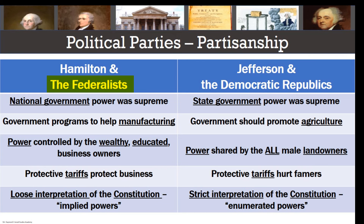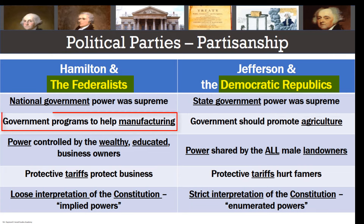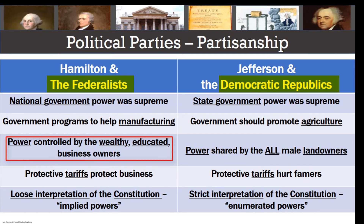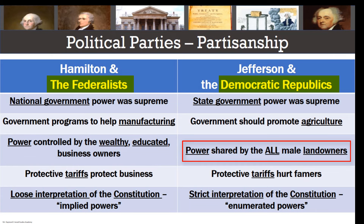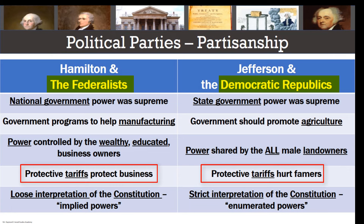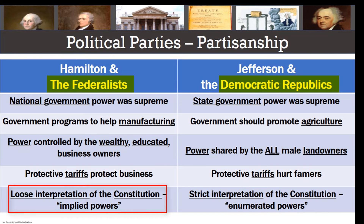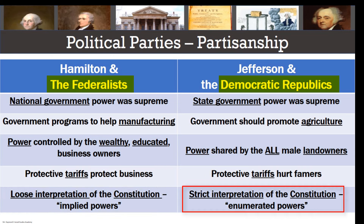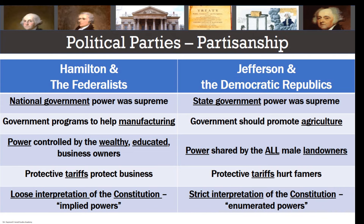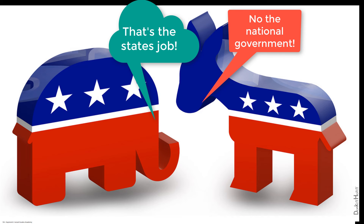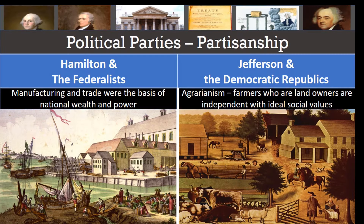Here's a look at where the two parties differed. Federalists thought the national government was supreme, while Republicans thought state governments should be more powerful. Federalists favored manufacturing, while Republicans favored farming. Federalists thought power should be held by the wealthy, the educated, and business owners, while Republicans thought all male landowners should have power. Federalists liked tariffs; Republicans hated them. Federalists wanted a loose interpretation of the Constitution with its implied powers, and Republicans wanted a strict interpretation with the government only having those powers expressed in the Constitution. Many of these issues are exactly the same ones that modern Democrats and Republicans argue about today.